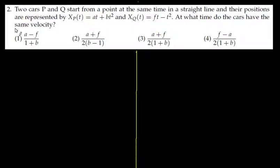Two cars P and Q start from a point at the same time in a straight line and their positions are represented by x_p(t) which is equal to at + bt² and x_q(t) which is equal to ft - t². The question is at what time do the cars have the same velocity?